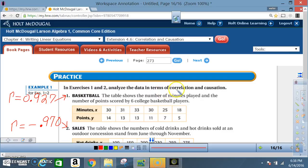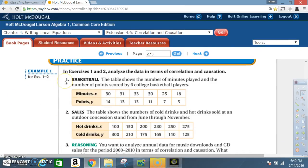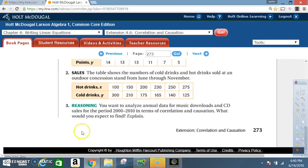For exercise number one, the correlation coefficient r equals 0.927. For practice problem number two, the correlation coefficient r equals negative 0.970. Now given that information, you should be able to work problems one and two in terms of correlation and causation. In problem number three,